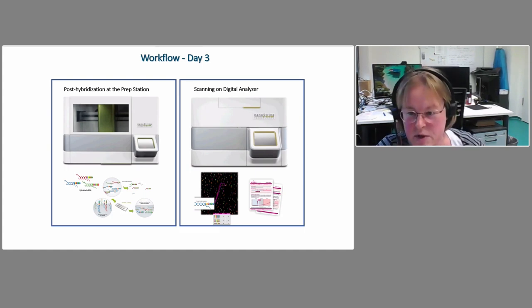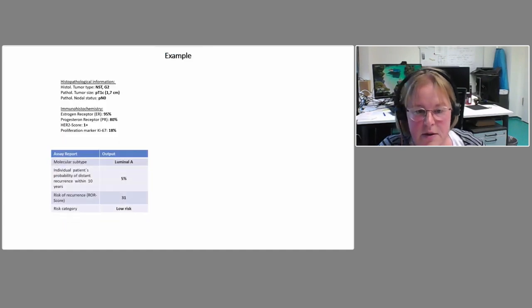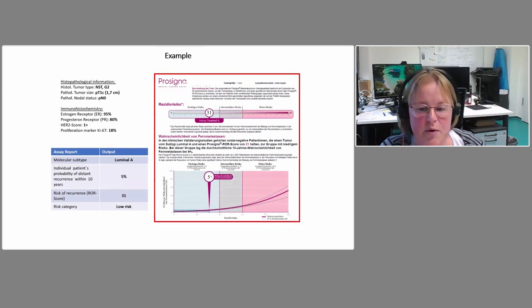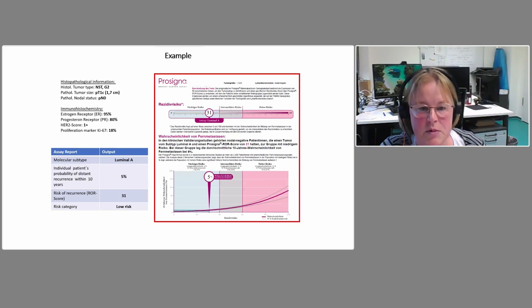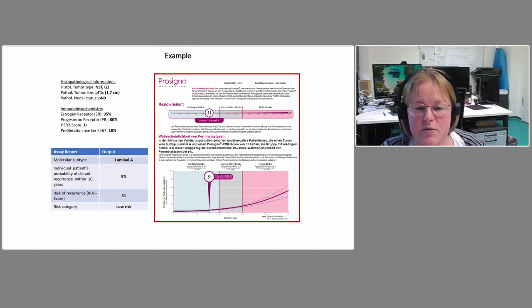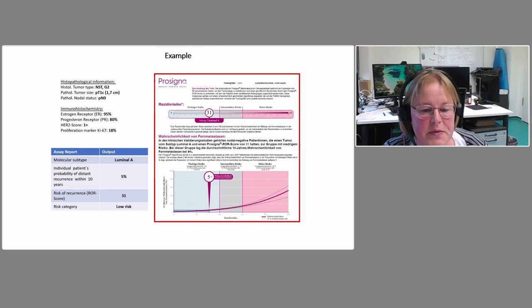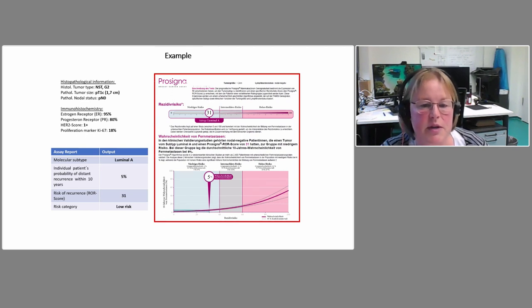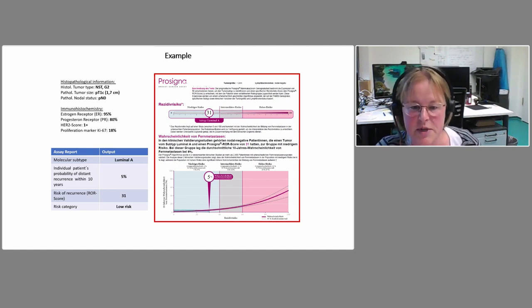Here's an example report for one patient. On the left-hand side is the histopathological information and immunohistochemistry results. The ProSigna report shows a subtype of luminal A — meaning low risk for this patient — with an ROR value of 31. This fits very well with the histopathological information and the immunohistochemistry, meaning this patient does not need chemotherapy.